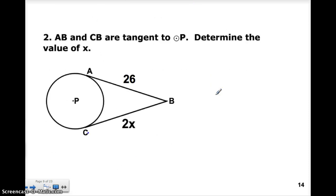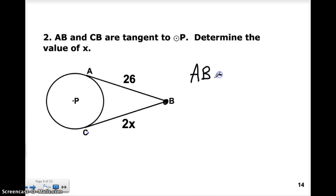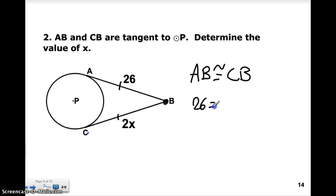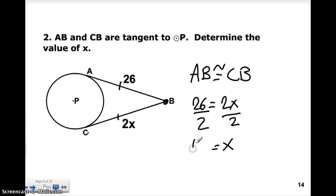Let's look at another example. Once again, we have AB and CB and they're both tangent to circle P. We want to determine the value of X. Since they're both tangent and they meet at external point B, we know that AB is congruent to CB. So I can say AB, which is 26, is equal to CB, which is 2X. Now all I have to do is solve for X by dividing both sides by 2, and we get X is equal to 13.